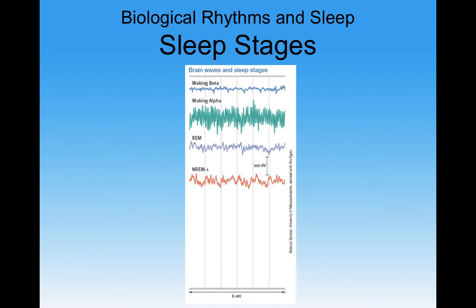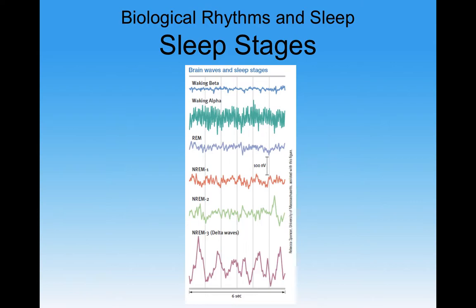When looking at brain waves, you can actually pinpoint the exact moment someone falls asleep. When non-REM stage one sleep happens, you start to see waves in non-REM one, non-REM two, and non-REM three. As you look down through those three stages, you notice the waves get deeper — big long extending waves.